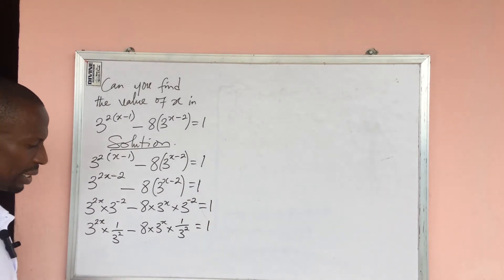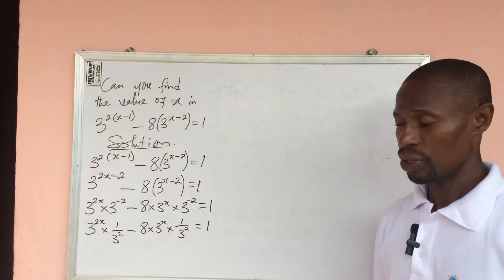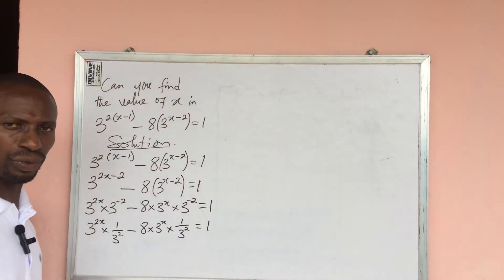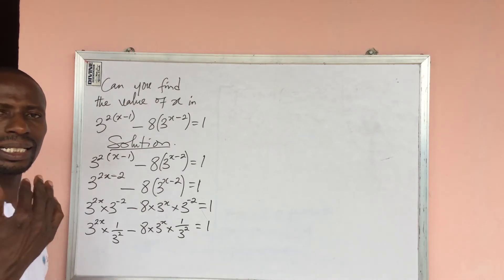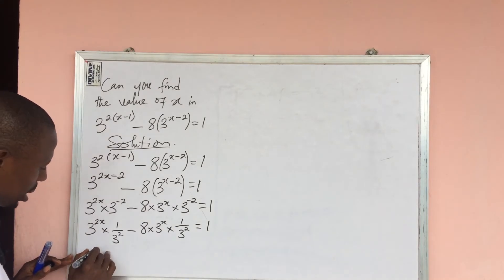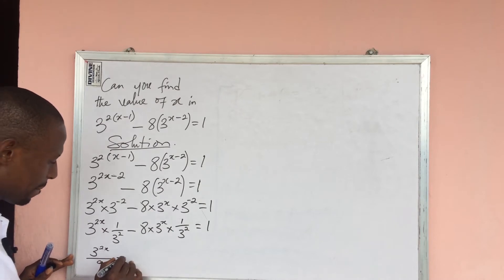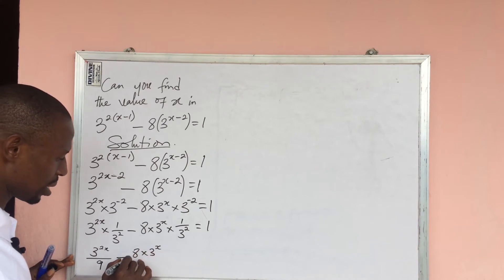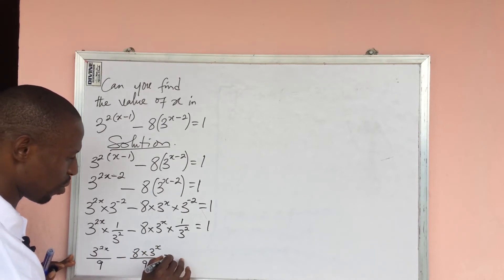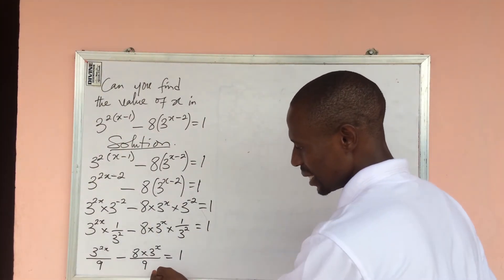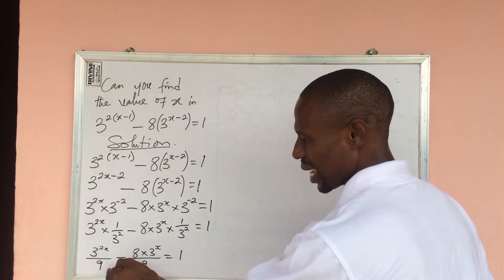Since 3 to the power of 2 equals 9, we can simplify this to: 3 to the power of 2x all over 9, minus 8 times 3 to the power of x all over 9, equal to 1.